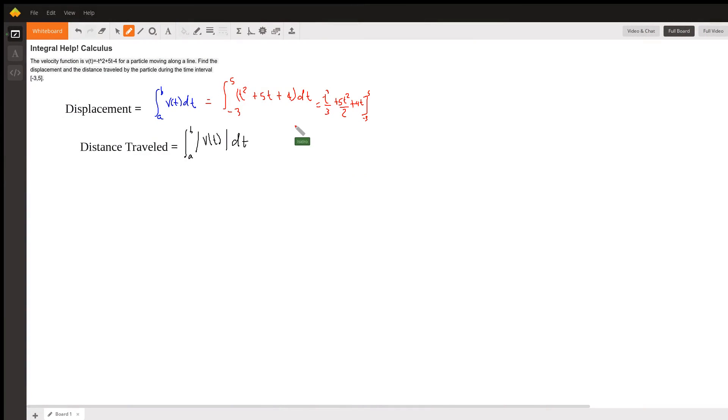In this video we're going to establish the difference between displacement and distance traveled. The velocity is given by t squared plus 5t plus 4. Remember that the derivative of the position is velocity, and we're going back by integrating from negative 3 to 5.